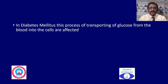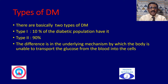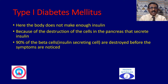In diabetes mellitus, this process of transporting glucose from the blood into the cell is defective. There are basically two types of diabetes. Type 1 accounts for 10% of the diabetic population, while the remaining 90% have type 2 diabetes. In type 1 diabetes mellitus, the body does not make enough insulin because of the destruction of the cells in the pancreas that secrete insulin. Ninety percent of the beta cells — the insulin-secreting cells in the pancreas — are destroyed before symptoms are noticed.